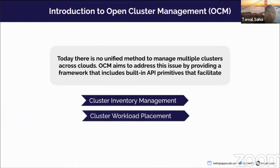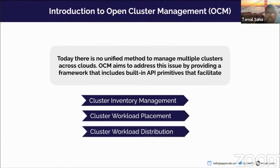The second API is workload placement. When you have so many clusters, you need a way to place your workloads — deployments, stateful sets, etc. — on one or a subset of these clusters. The third is workload distribution: the actual mechanism for distributing workloads from a central hub cluster to individual managed clusters, also called spoke clusters.